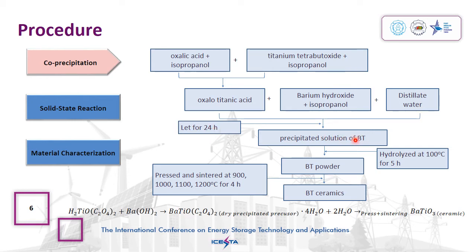Then, the precipitated solution was hydrolyzed at 100 degrees Celsius for 5 hours to get the BT powder. Then, the BT powder was pressed and sintered at various sintering temperatures from 900 degrees Celsius to 1200 degrees Celsius for 4 hours at a heating rate of 10 degrees Celsius per minute to get the BT ceramic.